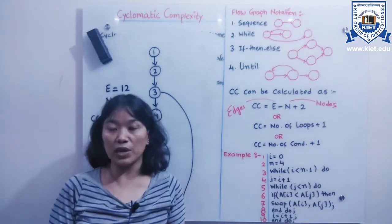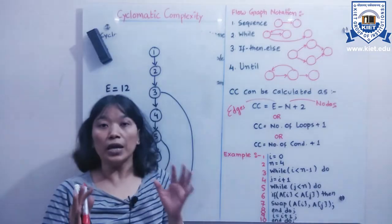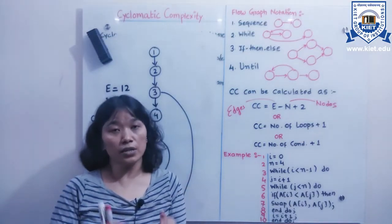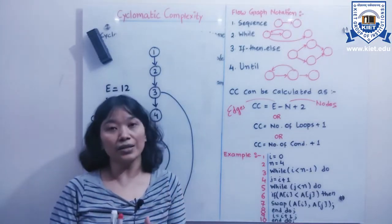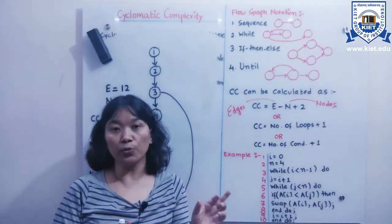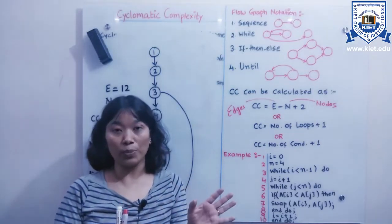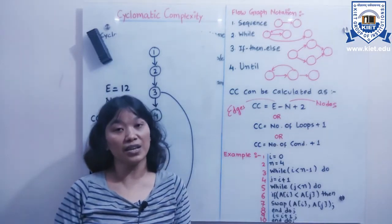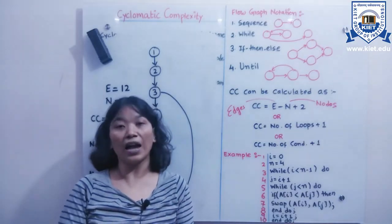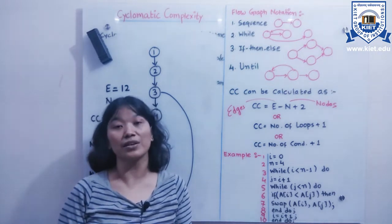The cyclomatic complexity value tells us the risk level of the code. If CC is between 1 and 10, there is no significant risk and the code is testable. If it is between 11 and 20, there is a moderate risk. If CC is between 21 and 50, the code has high risk. If it is beyond 50, the code has very high risk and is considered totally untestable — it is not advisable to test code with cyclomatic complexity greater than 50.